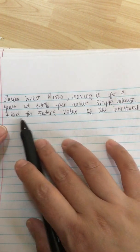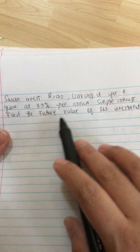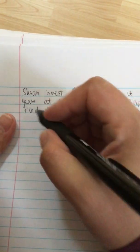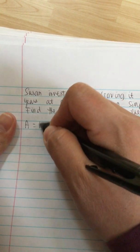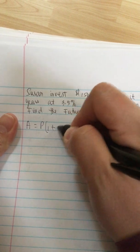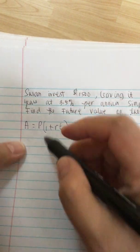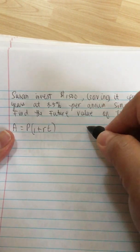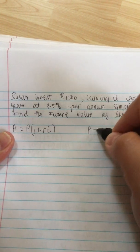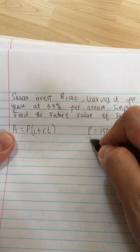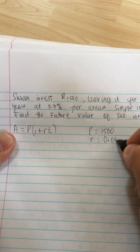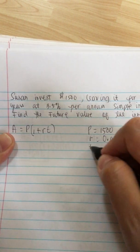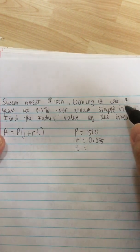Simple interest - find the future value of the investment. So the formula for simple interest future value is A is equal to P times (1 plus R T). So we list our parameters. P is equal to 1,500, R is equal to 0.035, and T is equal to 4 years.